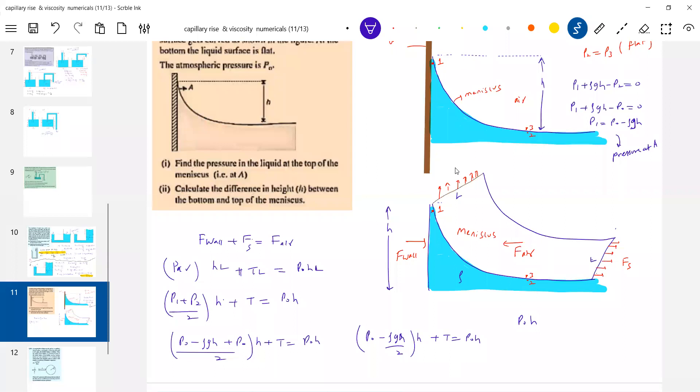P naught H will get eliminated. Then we have minus ρg H squared by 2 plus T equal to zero. So H equals square root of 2T by ρg. This is very important. You have to go for average pressure. I think this is what we did in fluid statics.